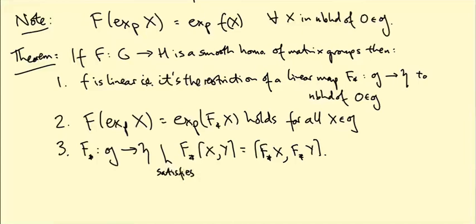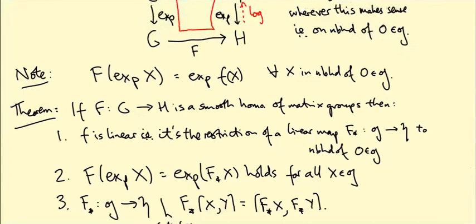This third condition is not unexpected because we obtained F star by taking F inside the exponential. The Baker-Campbell-Hausdorff formula tells us exp(A) times exp(B) is exp of something involving the Lie bracket. So if F preserves the group product, F star should preserve the Lie bracket.